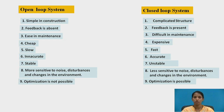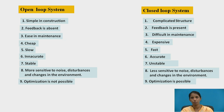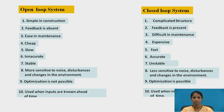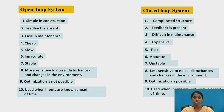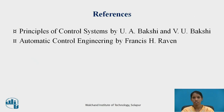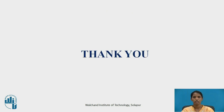Optimization is not possible in open loop systems due to the absence of feedback and fewer components, whereas in closed loop systems there is scope for optimization. These were the key points of comparison. Thank you.